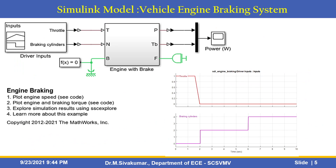These are the Simulink models designed using Simscape Driveline MATLAB Simulink software. The main subsystems are driver inputs — throttle and 8 braking cylinders — which are configured using a signal builder block. The next subsystem is the engine with brake subsystem, and finally we calculate total power versus braking power. Using this model, we can plot engine speed, plot engine and braking torque, and use the Simscape Result Explorer to find simulation results for each block.